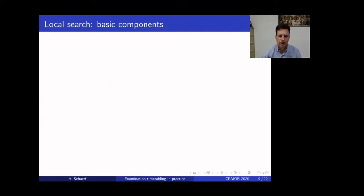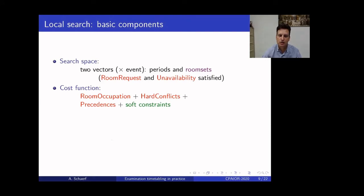Okay, let's go to the solution techniques. So, we are using Simulated Annealing, which is a local search technique, so we start with the basic features of local search. So, first, the search space. The space is a typical one. There are two vectors. One is the period assigned to an event, and the second one is the room set, which can be, as I said, the dummy room or a single room or a combination of rooms. And these two constraints are always satisfied, whereas the others are included in the cost function. So, the cost function is a combination of three hard constraints plus all the soft ones. Obviously, the hard constraints are given a larger weight.